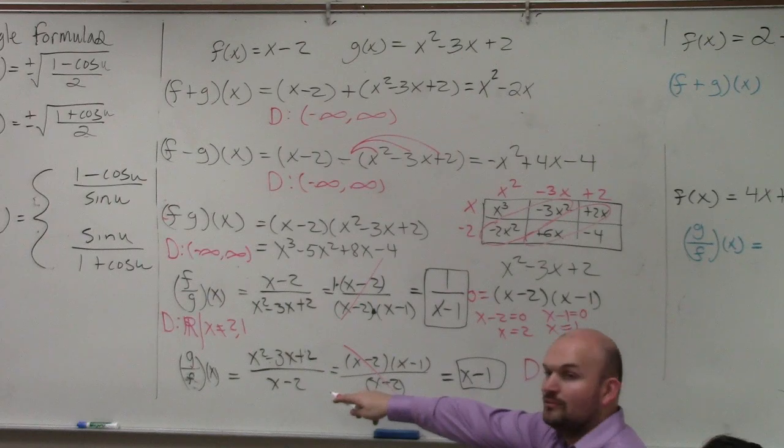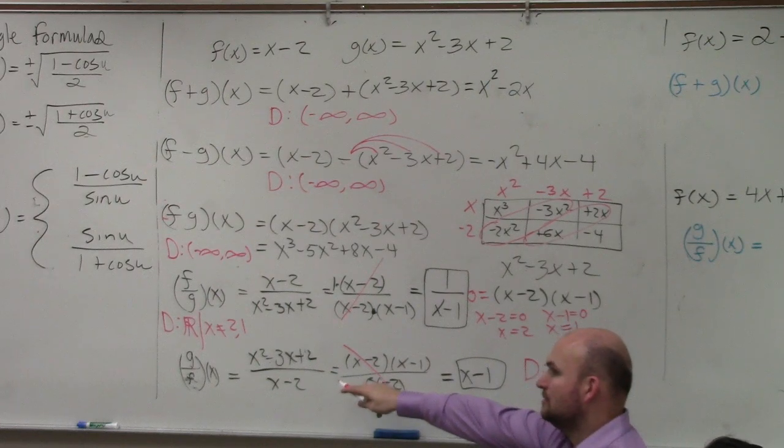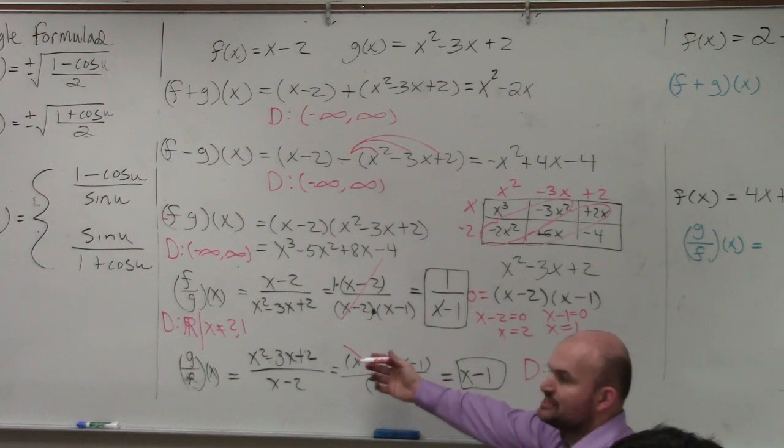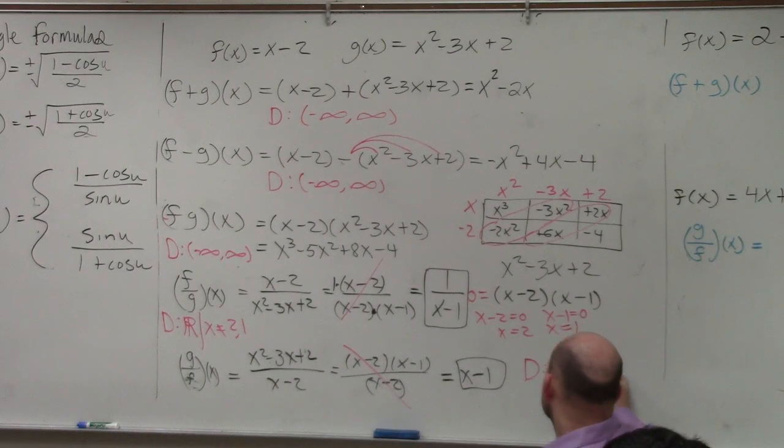So your domain, what was in my denominator? X minus 2. So the values that would make that 0 would be 2. So all real numbers except x cannot equal 2.